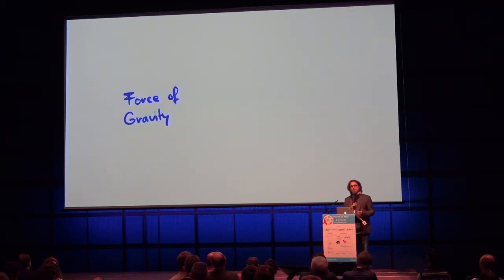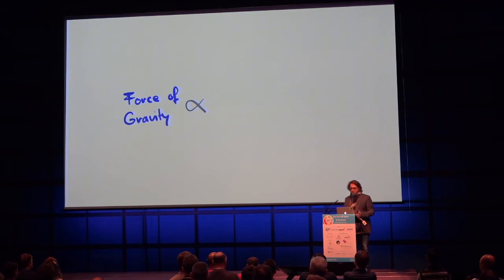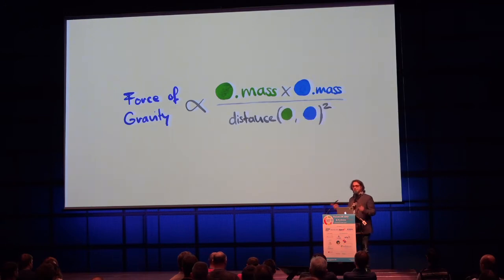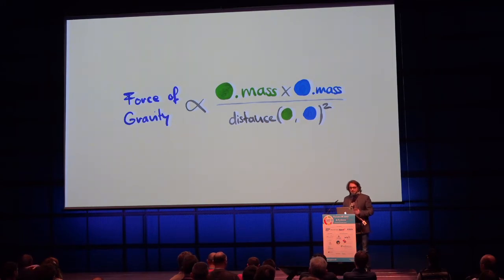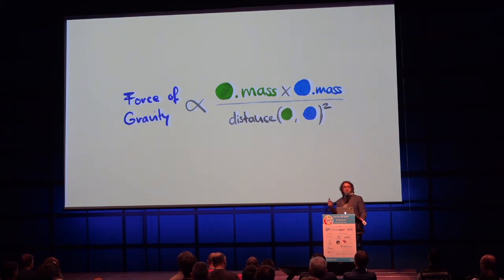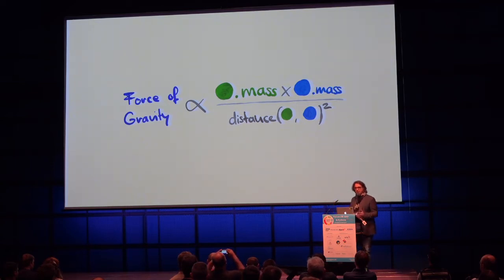Newton's formula for the force of gravity states that the force between two bodies is proportional to their masses multiplied, divided by their distance squared — the inverse square law. There is a proportionality constant that Newton didn't discover; that was found later by Gauss. But this method is sound, and even the moon landings were calculated using Newtonian physics.